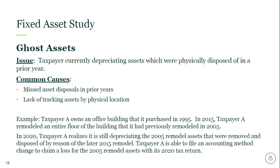Fixed asset studies can also open opportunities for disposing assets that have been mistakenly left on the fixed asset schedule even when the physical asset itself has been abandoned or removed. We refer to these as ghost assets, and this can be beneficial for personal property tax reporting as well. For example, let's imagine a taxpayer purchased a large office building in 1995. In 2005, the taxpayer renovates the first floor to accommodate a new tenant space. Then in 2015, the taxpayer renovates the first floor again for typical tenant turnover. Then in 2020, through a fixed asset study, it is found that the taxpayer is still depreciating the 2005 assets, which were replaced in the 2015 remodel. The taxpayer is allowed to file an accounting method change to claim the loss for those 2005 assets on their 2020 return.